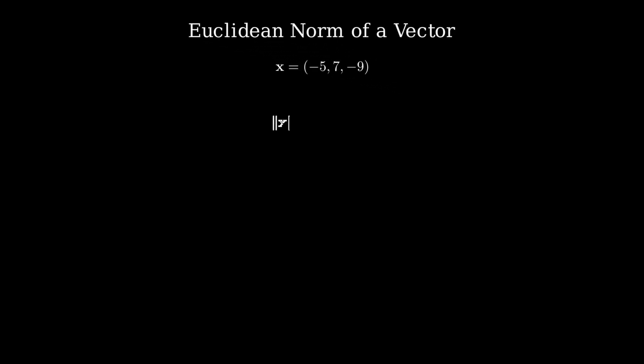To calculate the Euclidean norm of a vector, square each component of the vector. Sum these squared values. Take the square root of the result. This gives the magnitude of the vector.